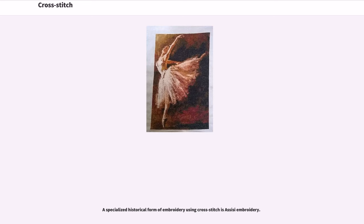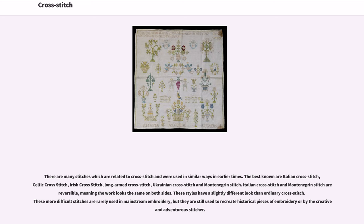A specialized historical form of embroidery using cross-stitch is Assisi embroidery. There are many stitches related to cross-stitch that were used in similar ways in earlier times. The best known are Italian cross-stitch, Celtic cross-stitch, Irish cross-stitch, long-armed cross-stitch, Ukrainian cross-stitch, and Montenegrin stitch. Italian cross-stitch and Montenegrin stitch are reversible, meaning the work looks the same on both sides, though these more difficult stitches are rarely used in mainstream embroidery.